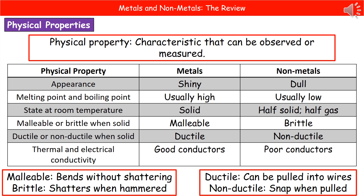First, we need to understand what a physical property actually is. Whenever we're talking about physical properties, or when you're asked about a physical property on the exam paper, you need to be talking about a characteristic that can be observed or measured. When we compare metals and non-metals, we find that these physical properties do vary.